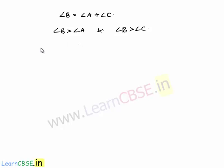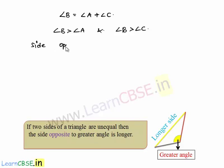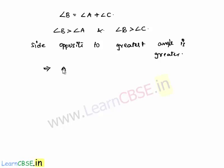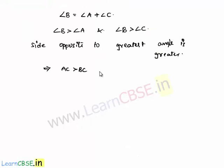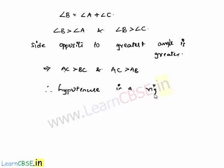By the concept that the side opposite to the greatest angle is the greatest, we can say that the side opposite to angle B, which is AC, is greater than the side opposite to angle A, which is BC, and also greater than the side opposite to angle C, which is AB. Therefore, AC is the greatest of the other two sides, and we have proved that the hypotenuse in a right angle triangle is greater than the other two sides.